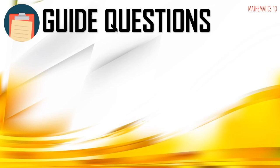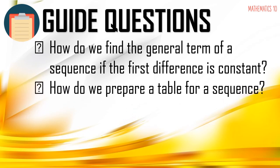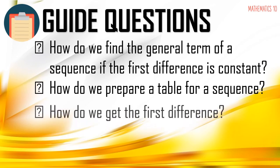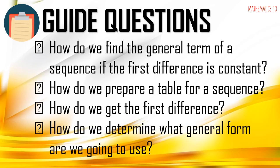Here are some guide questions for the content of this video. First, how do we find the general term of a sequence if the first difference is constant? Second, how do we prepare a table for a sequence? Next, how do we get the first difference? And lastly, how do we determine what general form we are going to use?